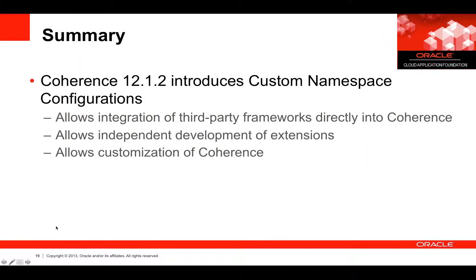In summary, Coherence 12.1.2 introduces the notion of custom namespace configurations as a native supported feature. While we used to have this capability through extensions in the Coherence incubator, now it's part of 12.1.2. This allows better integration with third-party frameworks, independent development of extensions, and complete customization of Coherence. A good example is the Spring namespace handler, which is developed in an open-source style outside of the Coherence core product — meaning we can add new extensions to Coherence without changing Coherence itself.